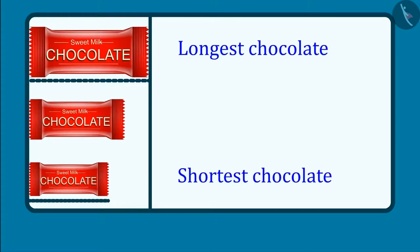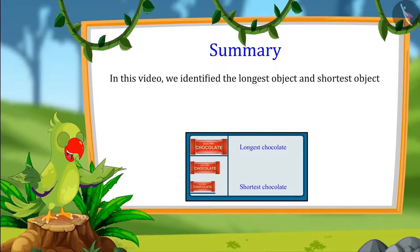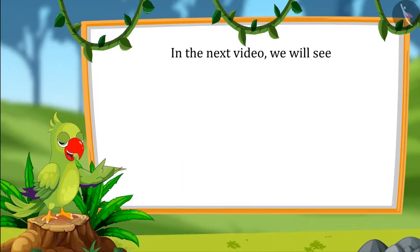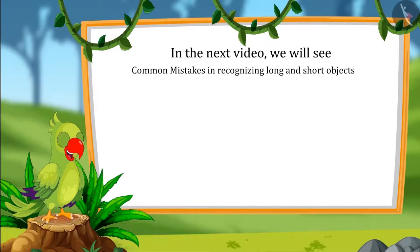This means that out of these three chocolates, this is the longest chocolate and this is the shortest chocolate. That is all for today. In this video, we identified the longest object and the shortest objects out of three objects. In the next video, we will see some common mistakes in identifying long and short objects. Till then, bye-bye friends.